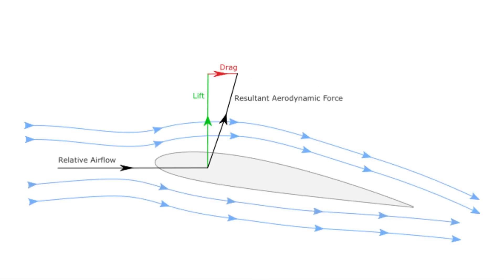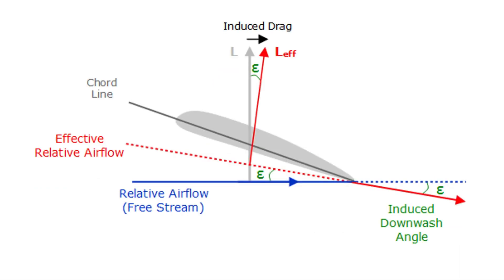Now, if we had an infinite wing — that is, a wing without any downwash — the lift vector L would be perpendicular to the relative airflow. But on a finite wing, the effective airflow is deflected downwards by a downwash angle epsilon. Hence the effective lift acts perpendicular to this effective airflow. Being tilted backward, this effective lift has a horizontal component along with the vertical component. This horizontal component creates an additional drag known as induced drag.